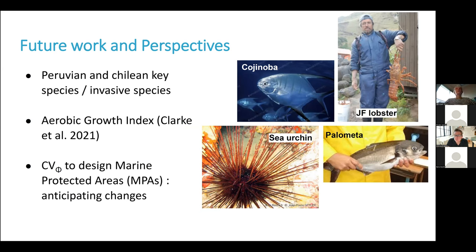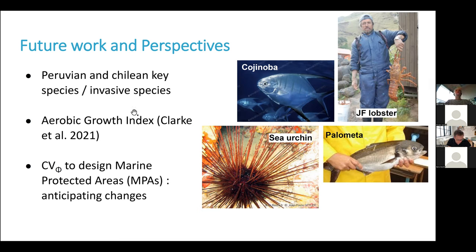For future work, we are going to look at more specific species: the Juan Fernandez lobster, two pelagic fishes — Corenoba and Calometa — of interest for aquaculture, and possibly the sea urchin of Juan Fernandez, which is invasive and a predator to the lobster, endangering this fishery. We'll also look at the aerobic growth index because the traits needed for this index seem easier to measure and more species are documented. Finally, I think CvΦ has great potential to help design marine protected areas — it's a nature-based solution and will be a powerful tool to help proactive marine conservation.